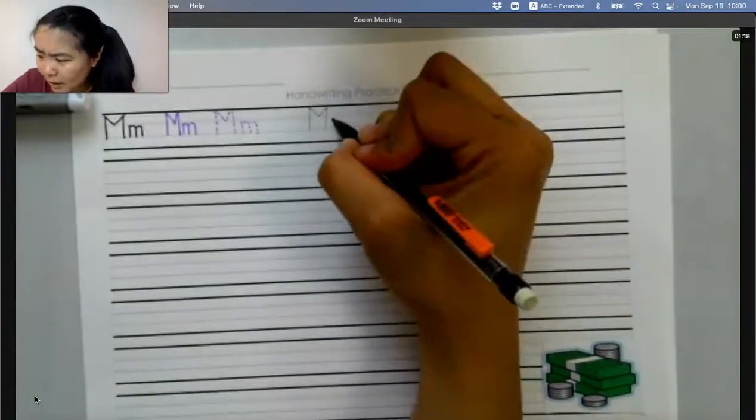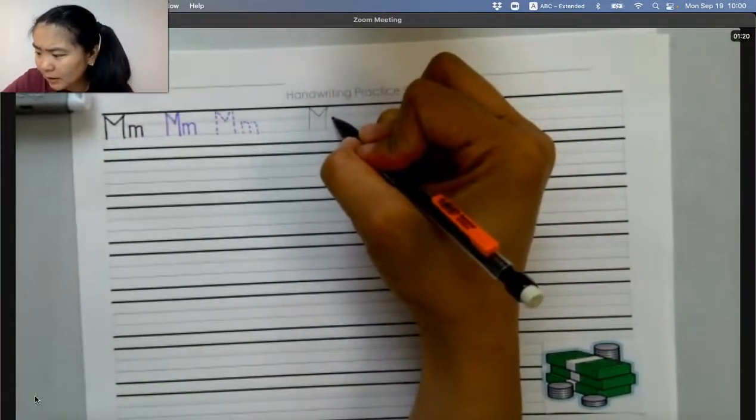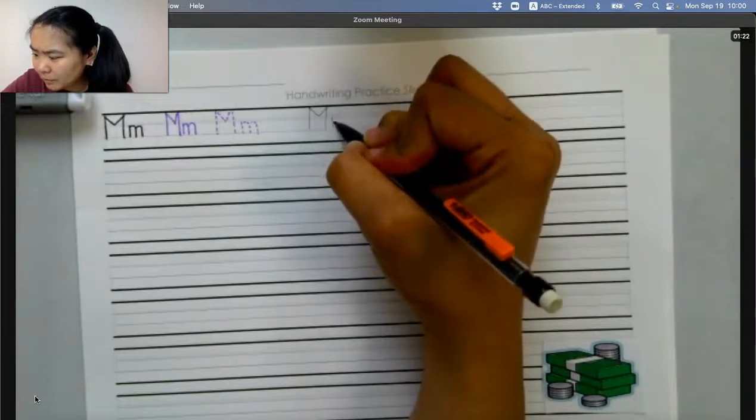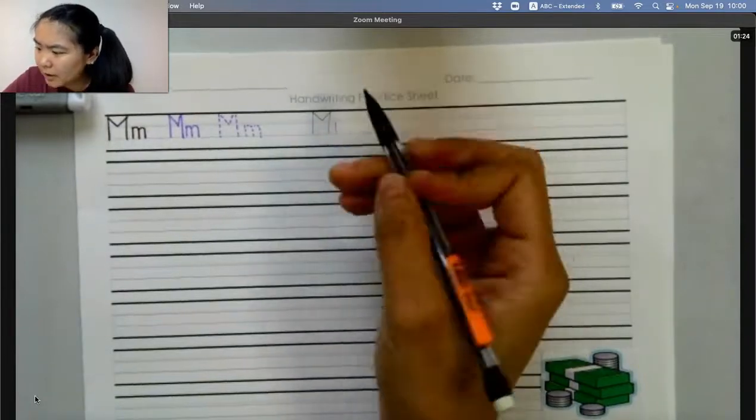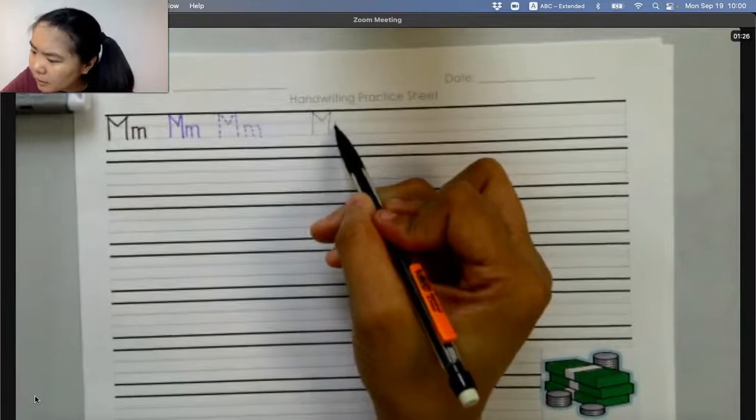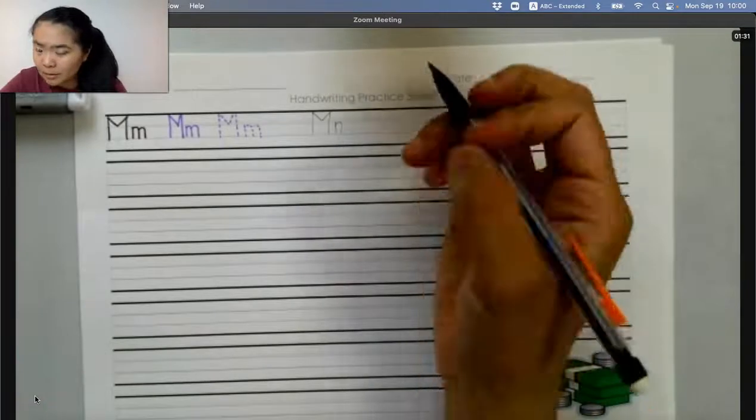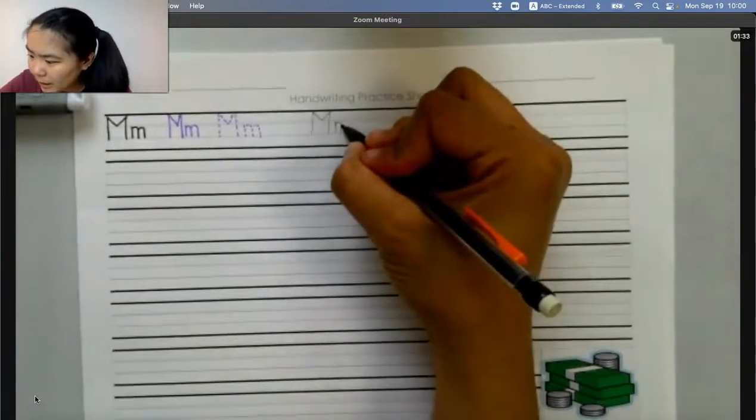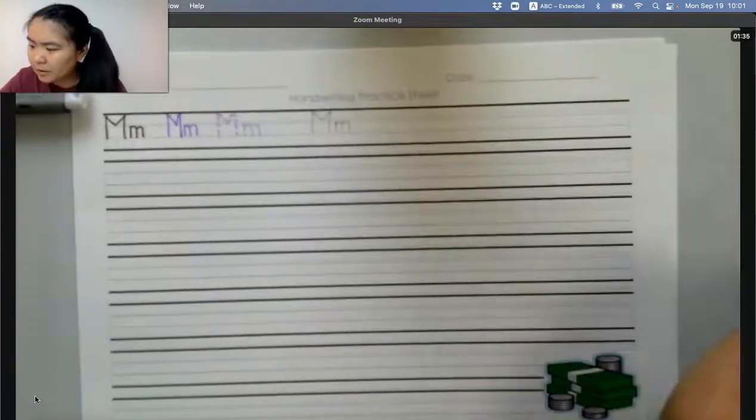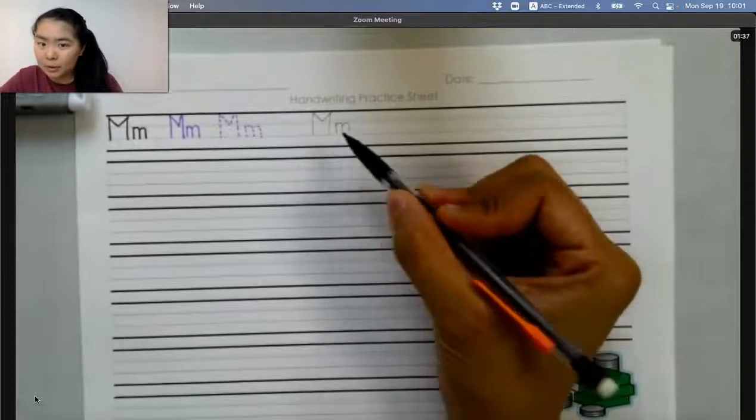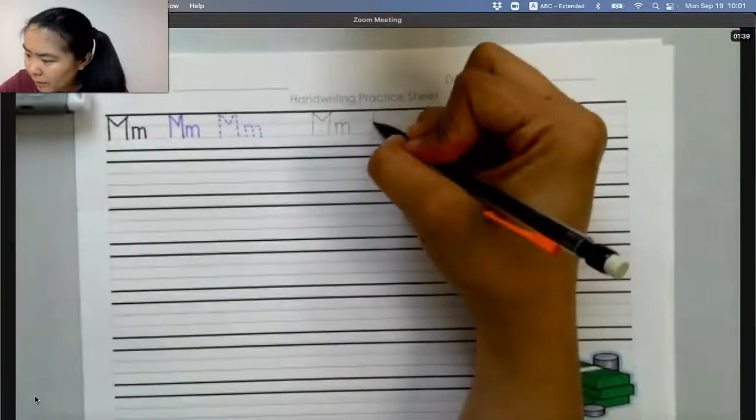Lowercase m. You start in the middle, on the middle line. Go to the bottom. And then we do that one more time. Capital M. Lowercase m. A bit faster.